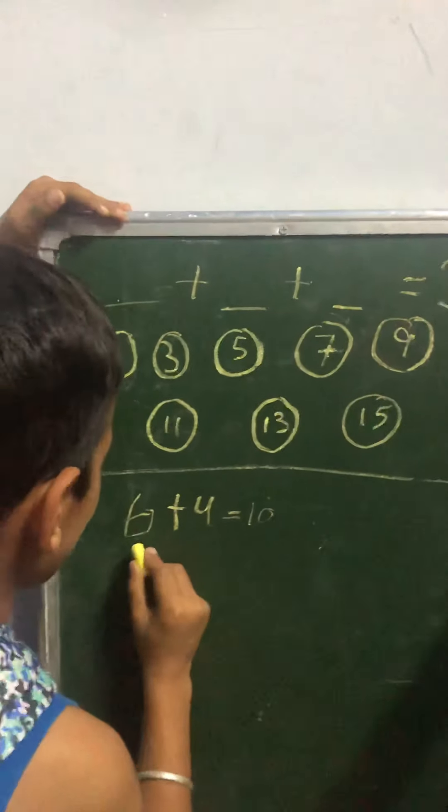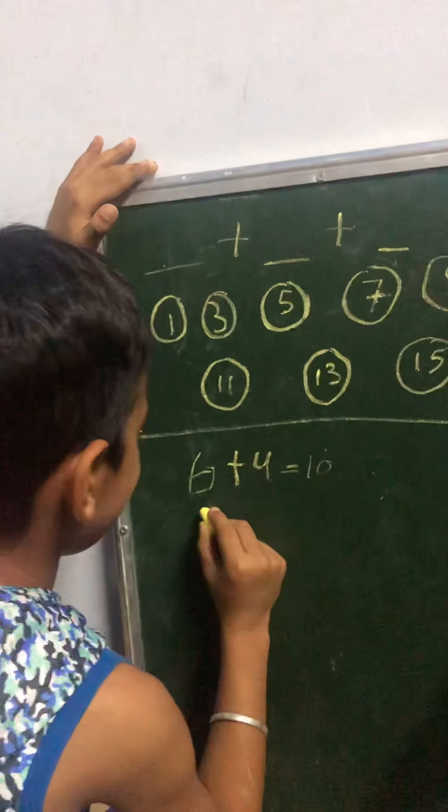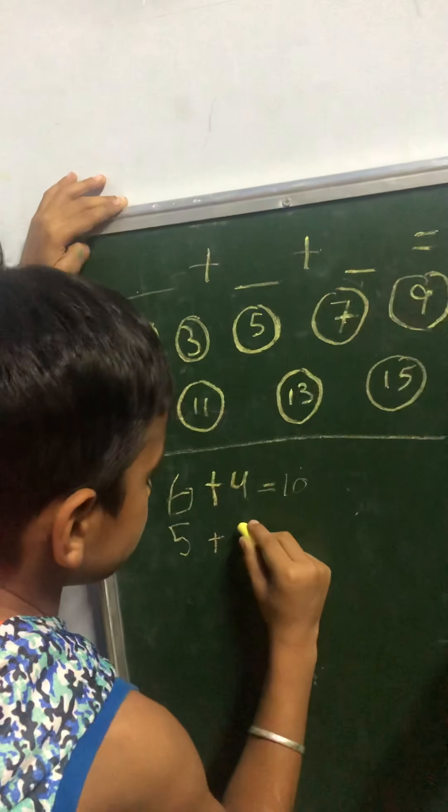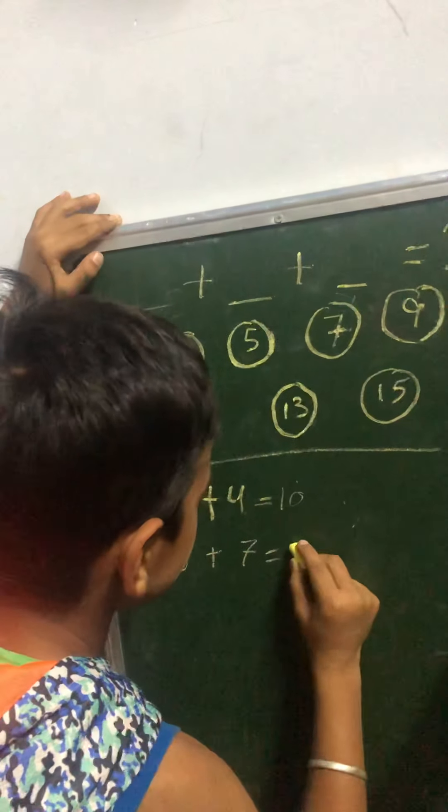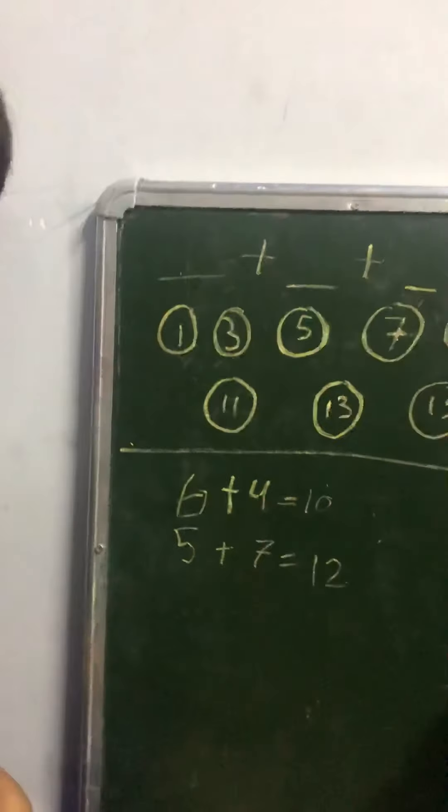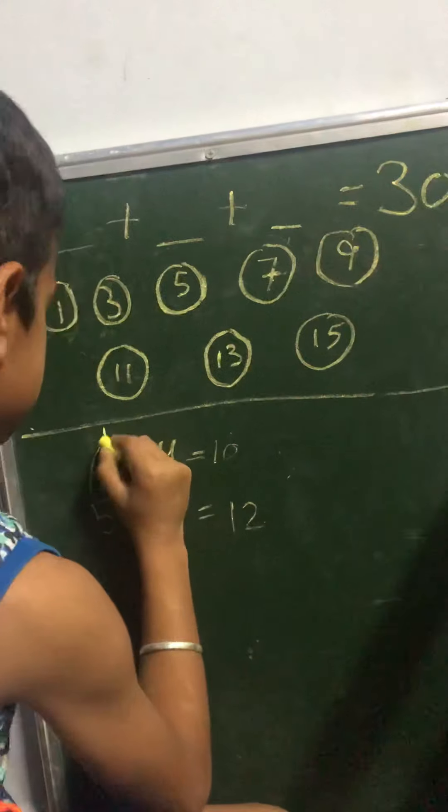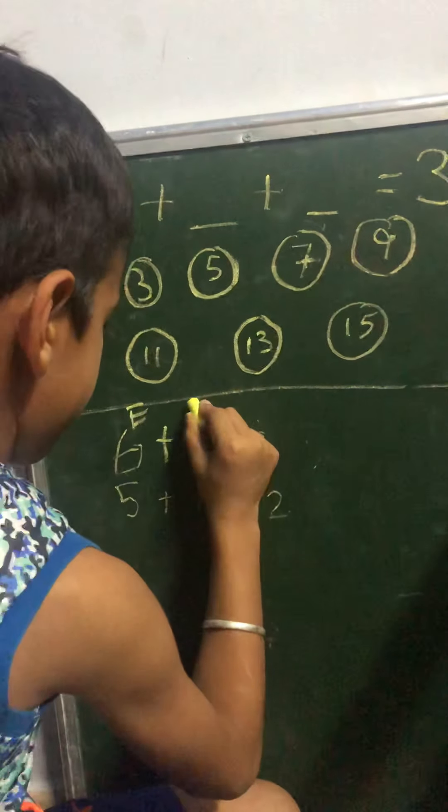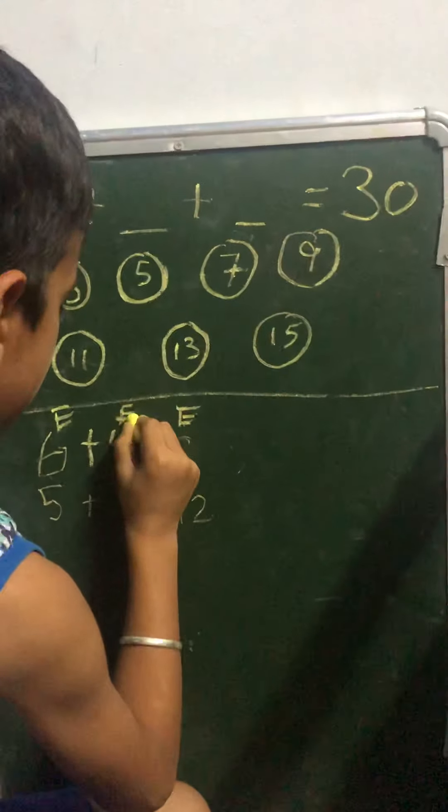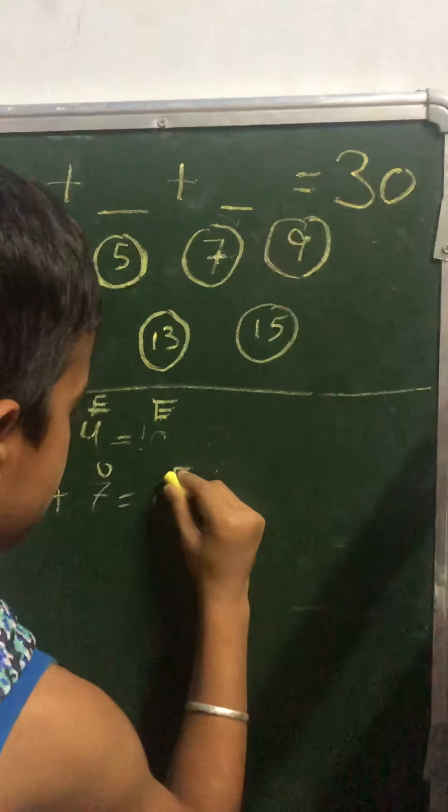And I'm writing O for odd, but I'll not write O. You can write E over here. And odd, 5 is O plus 7 is also O, which is equal to 12. So 12 is also an even number. It will be easy if you can write E over here to make it easy for me. And odd plus odd is equal to even.